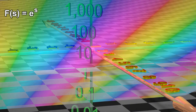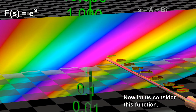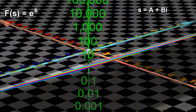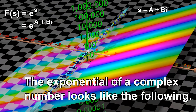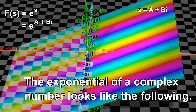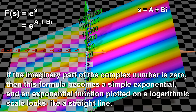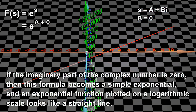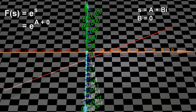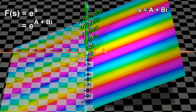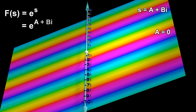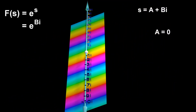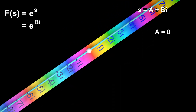Now let us consider this function. The exponential of a complex number looks like the following. If the imaginary part of the complex number is zero, then this formula becomes a simple exponential, and an exponential function plotted on a logarithmic scale looks like a straight line. On the other hand, if the real part of the complex number is zero, then we get a result where the magnitude of the function is always exactly equal to one, and it is only the phase of the output that changes.